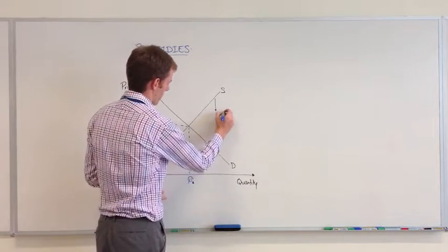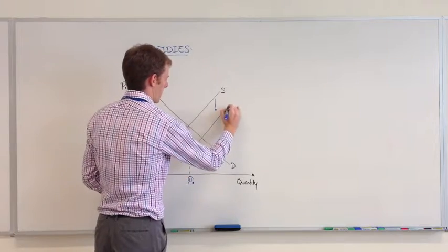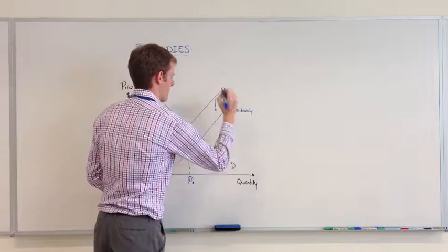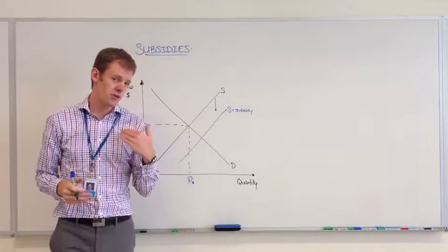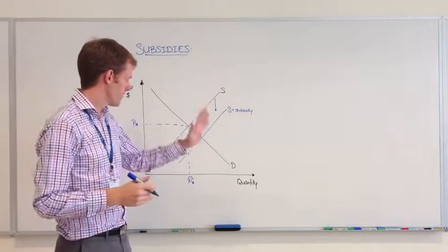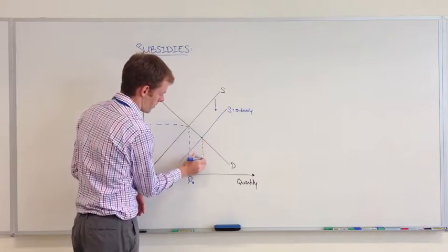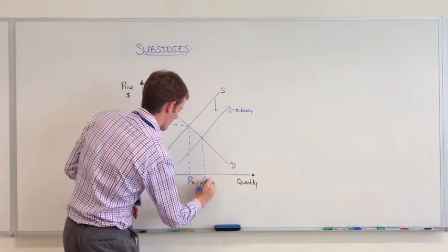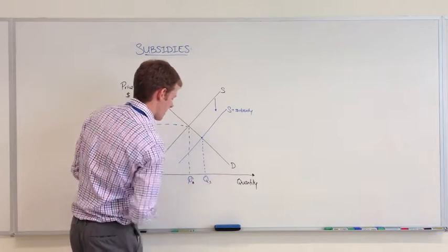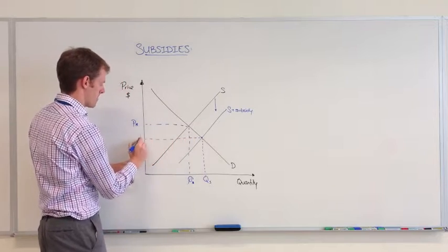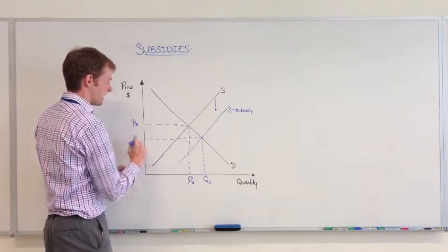What this does is lead to a vertical shift down of the supply curve, leading to changes in the quantity. We're aiming towards a new quantity and a lower price.